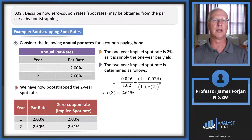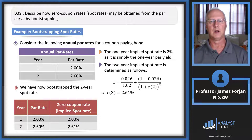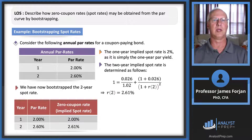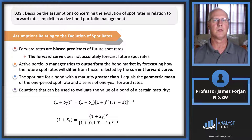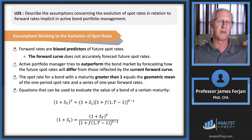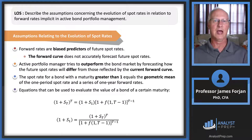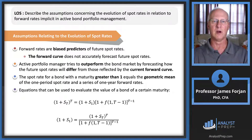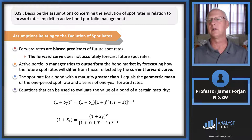That takes care of describing how zero coupon rates may be obtained from the par curve by bootstrapping. While the original reading covers this in just a paragraph or two, working through the math here should allow you to answer exam questions correctly. In active bond portfolio management, we need to know about spot rates and forward rates in order to deliver a fixed income portfolio according to clients' risk and return objectives and constraints.